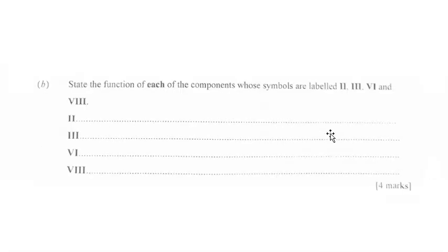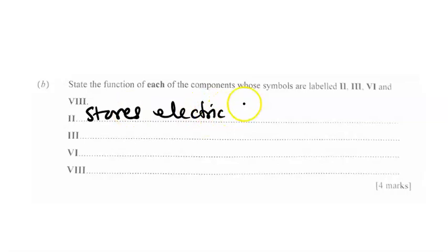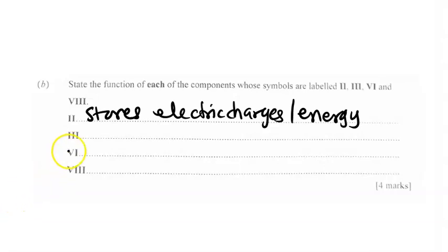The second question states the function of each of the components whose symbols are labeled II, III, VI, and IX. The first one, II, is a capacitor. The function of a capacitor is that it stores charge, or you can say it stores energy. Then we have III, which represents a resistor.